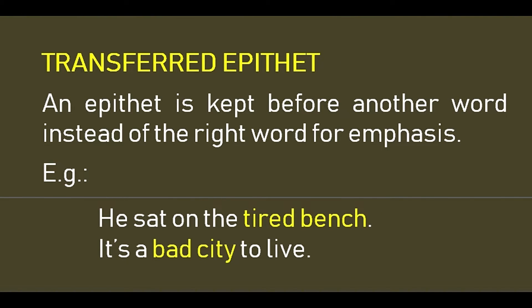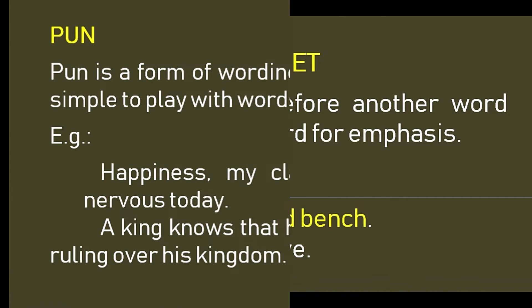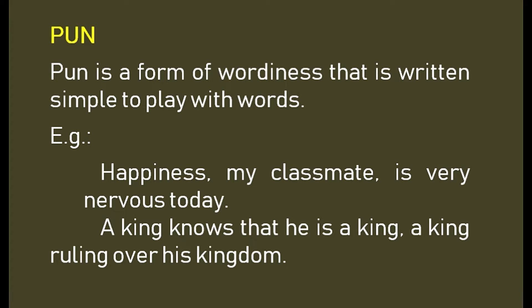Transferred Epithet: an epithet is kept before another word instead of the right word for emphasis. The adjective used to describe a noun is misplaced in the sentence. For example, 'he sat on the tired bench' — here the bench is not tired, but the person sitting on the bench is tired. Another example: 'it's a bad city to live in' — actually the city is not bad, but the people and the environment are bad.